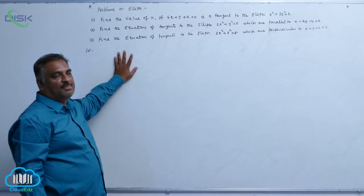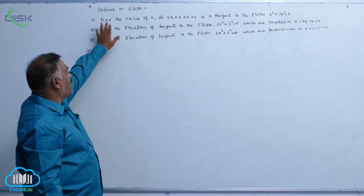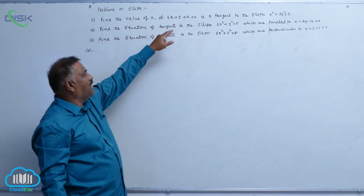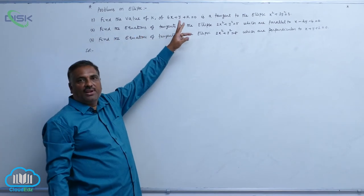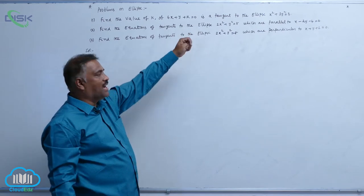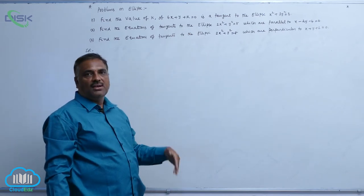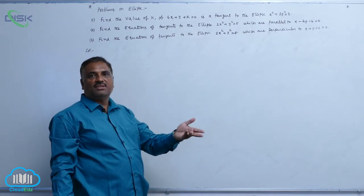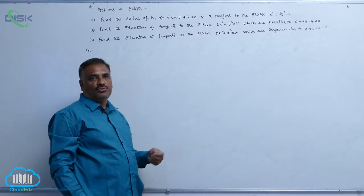We will discuss problems on ellipse. Find the value of k, if 4x plus y plus k equal to 0 is a tangent to the ellipse x squared plus 3y squared equal to 3.